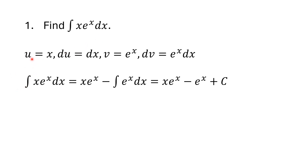What we're finding is one function times the derivative of the other. So I'm going to let u = x, and dv = eˣ dx. So the differential du = dx, and v = eˣ, since I'm integrating eˣ. The integral of u dv equals u·v — the product term — which would be x·eˣ.